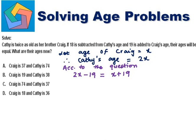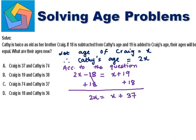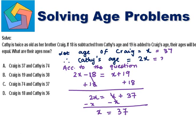18 is subtracted — I'm sorry, I wrote 19 earlier; this is 2X minus 18. So we can just solve: add 18 to both sides. 2X is equal to X plus 37. And we can subtract X. X cancels on the right-hand side; 2X minus X is X. X is 37. So Kreech's age will be 37, and Kathy's will be 2 times 37, which is 74. Kreech is 37 and Kathy is 74.